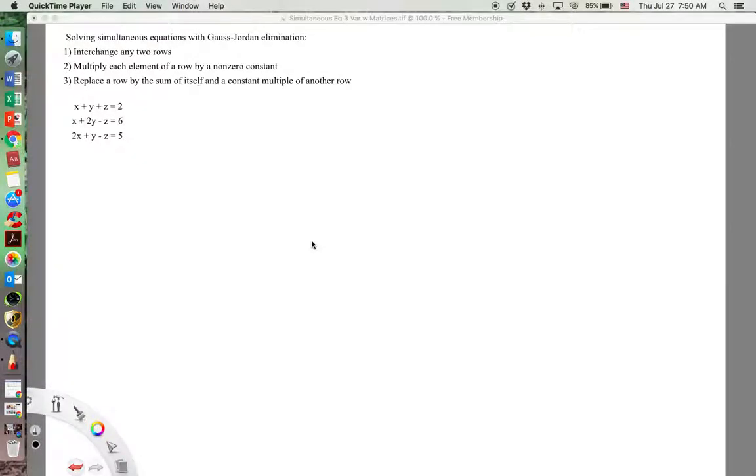Whenever we come across simultaneous or systems of equations in three or more variables, we have the option to use the elimination and substitution method in order to solve them, but sometimes that gets pretty messy. So let's take a look at solving these with matrices using Gauss-Jordan elimination.